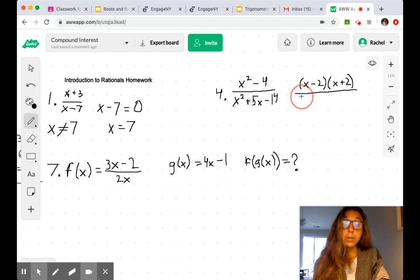So we're looking for two numbers that multiply to negative 14, but add to positive 5. And we get x plus 7 and x minus 2.